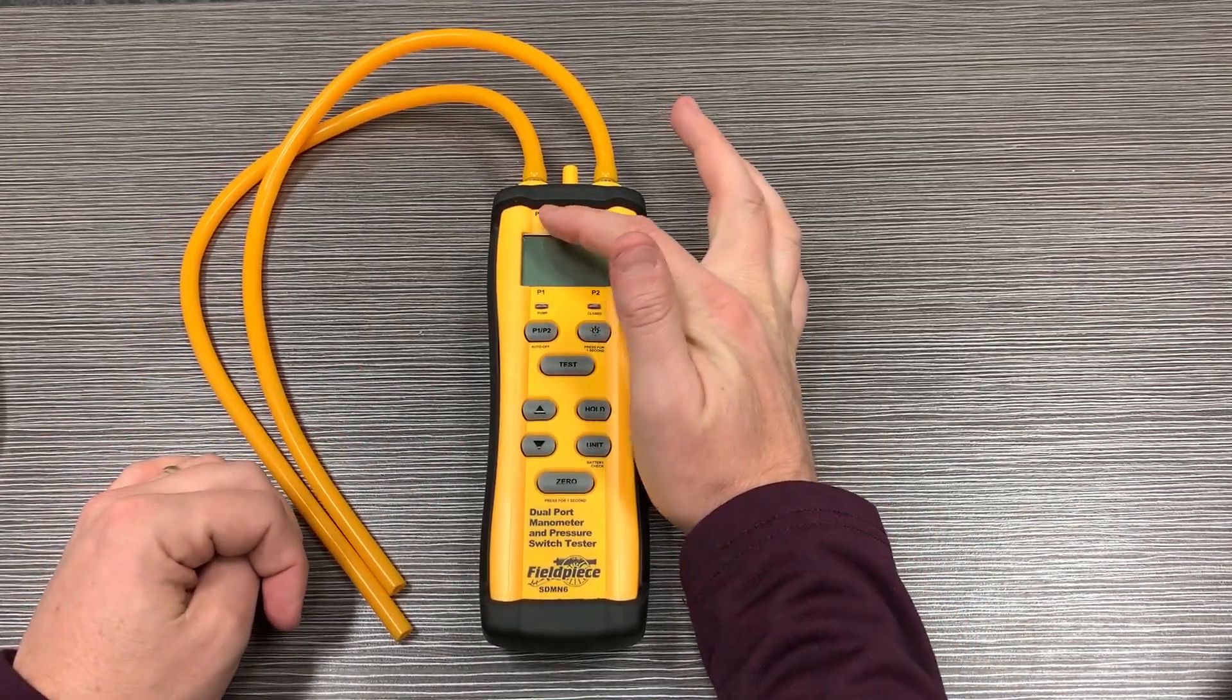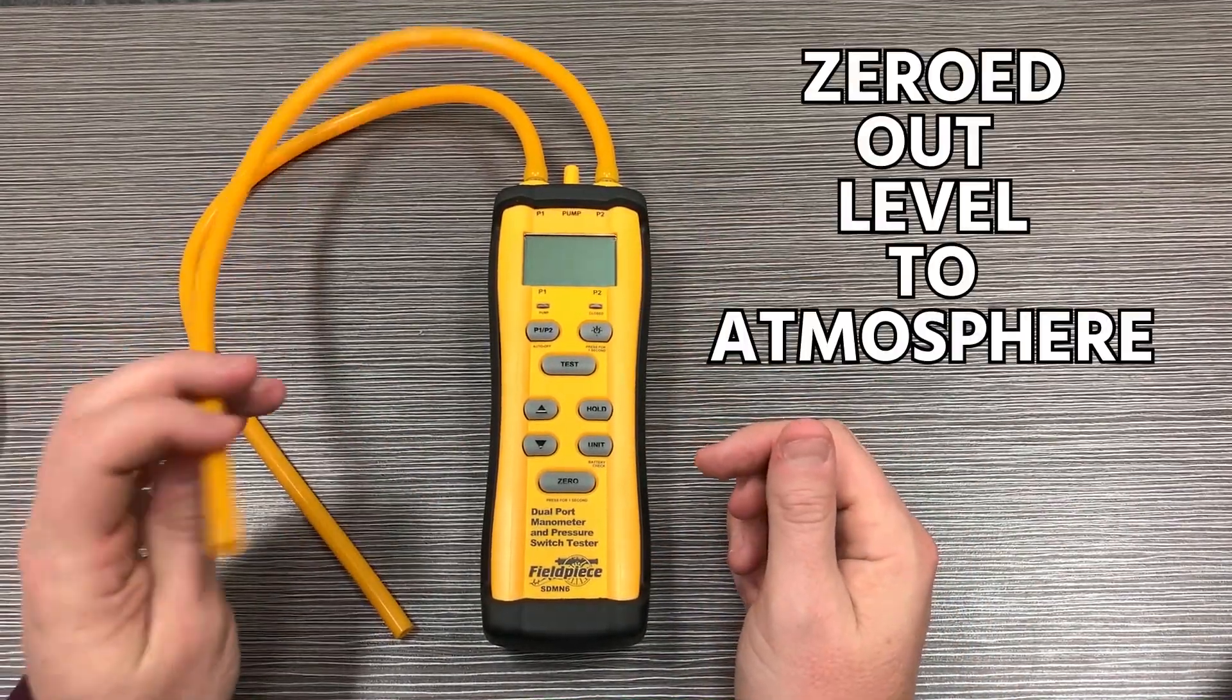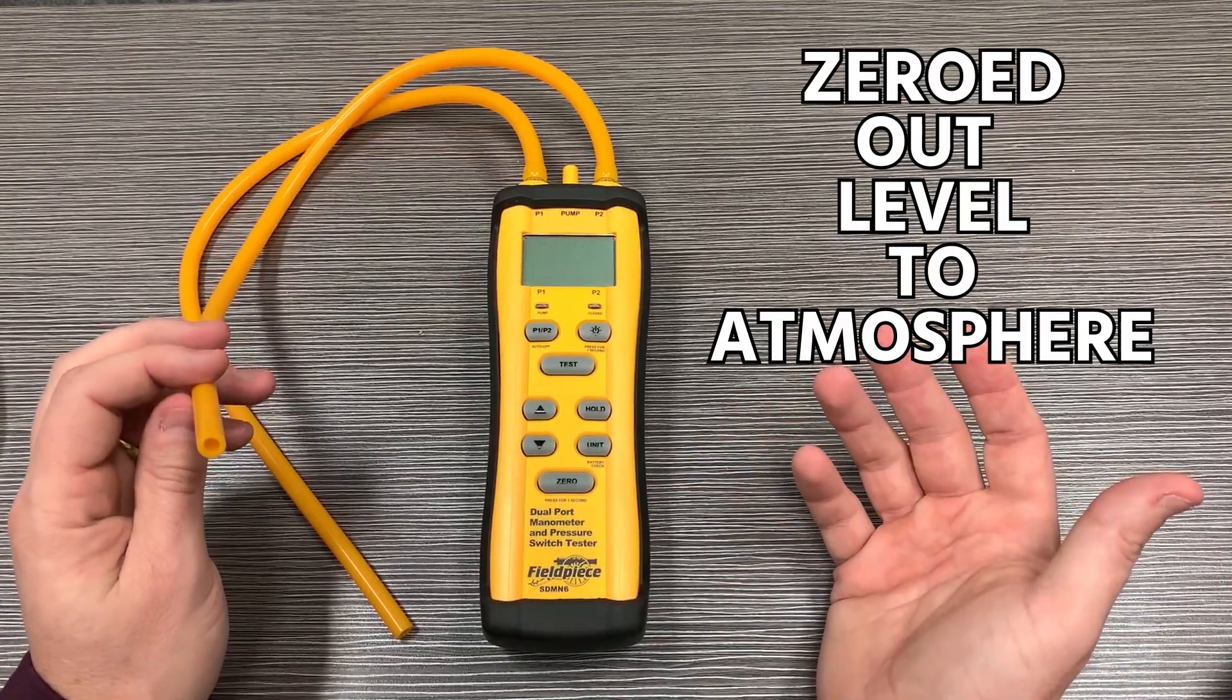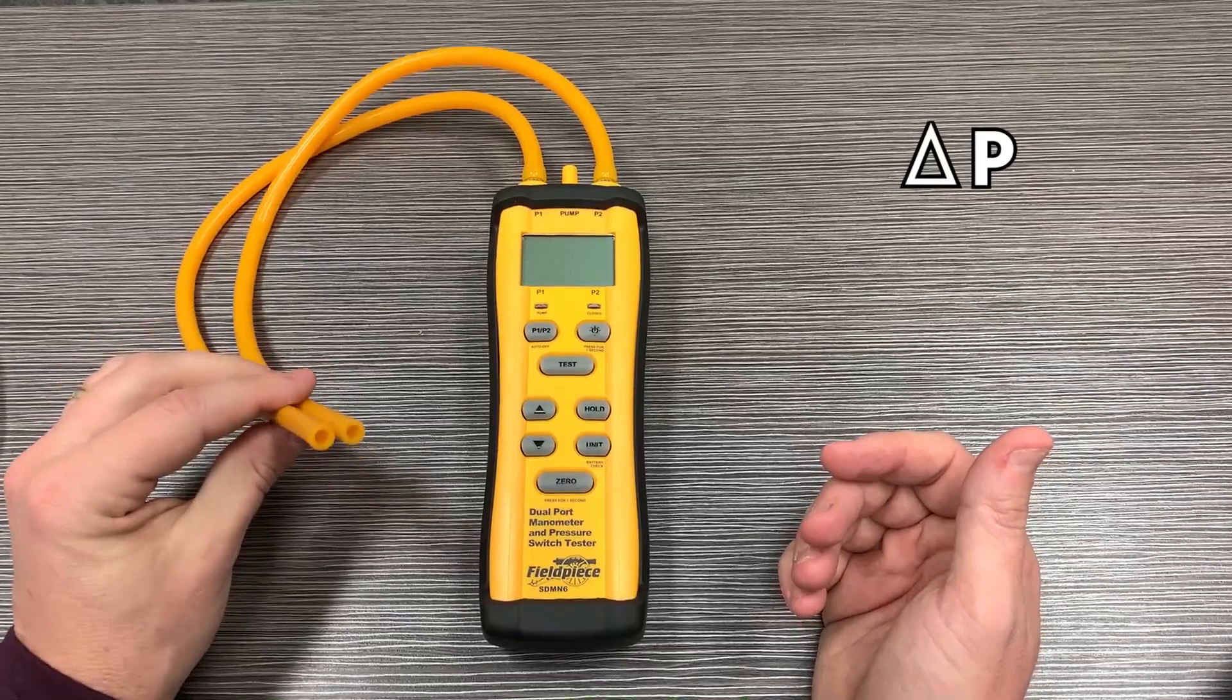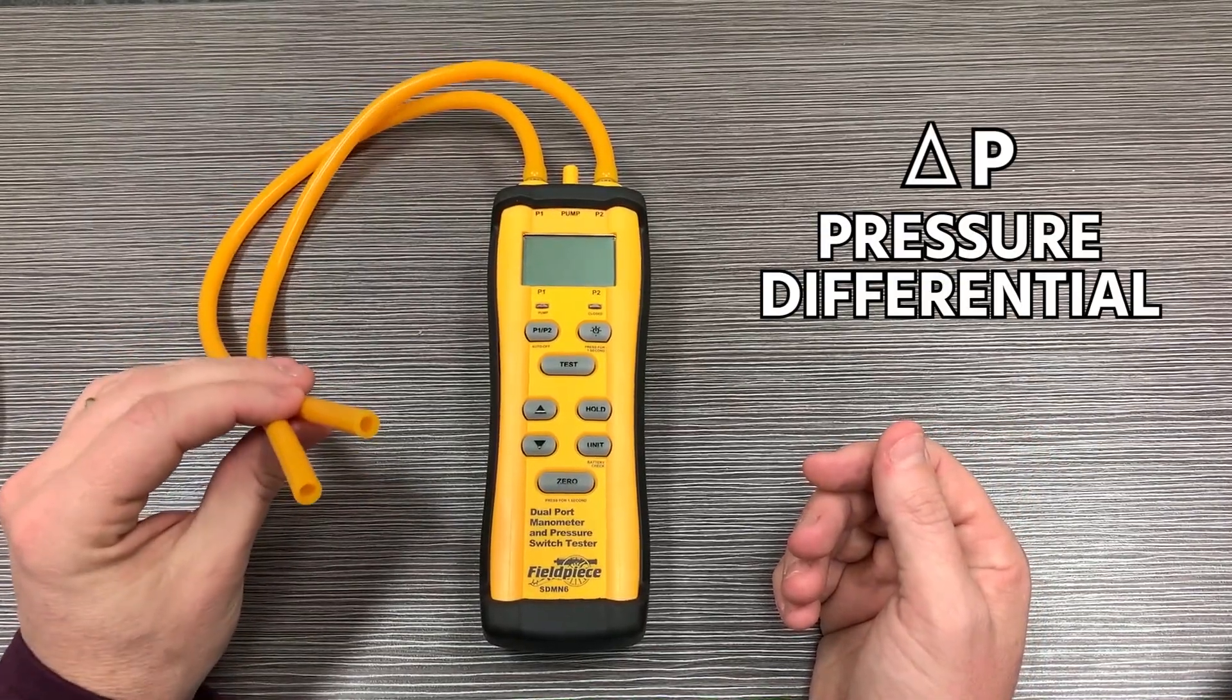There's a measurement from one hose to atmosphere or whatever the zeroed-out level is, and then there's a measurement between the two probes, which is what we would call a delta P, the pressure differential between the two.